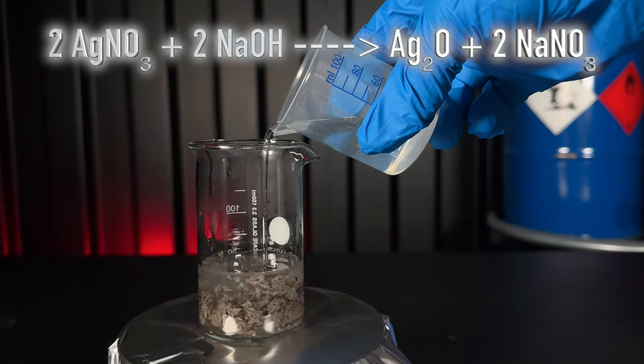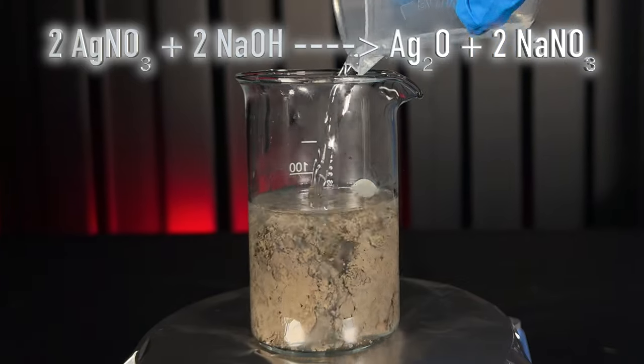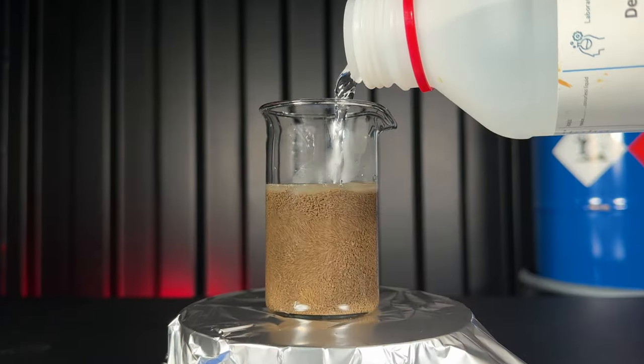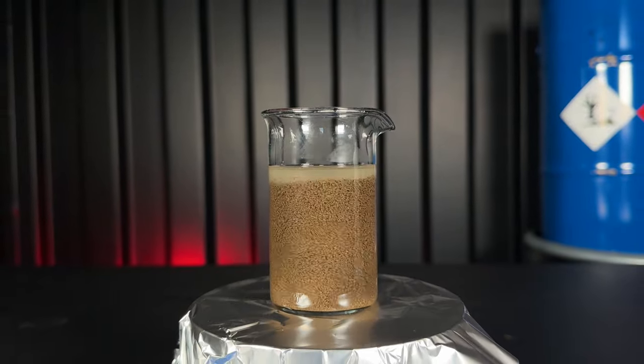When silver nitrate reacts with sodium hydroxide, it instantly forms this nasty looking brown silver oxide. I added more dihydrogen monoxide and stirred the reaction for 2 hours to ensure that all the silver nitrate gets destroyed.